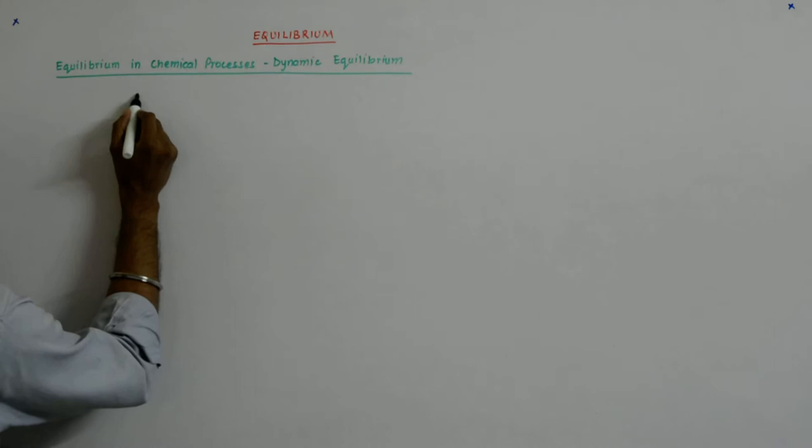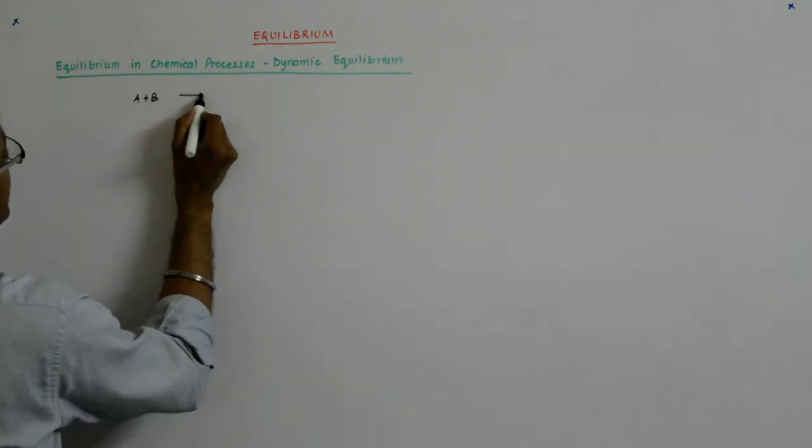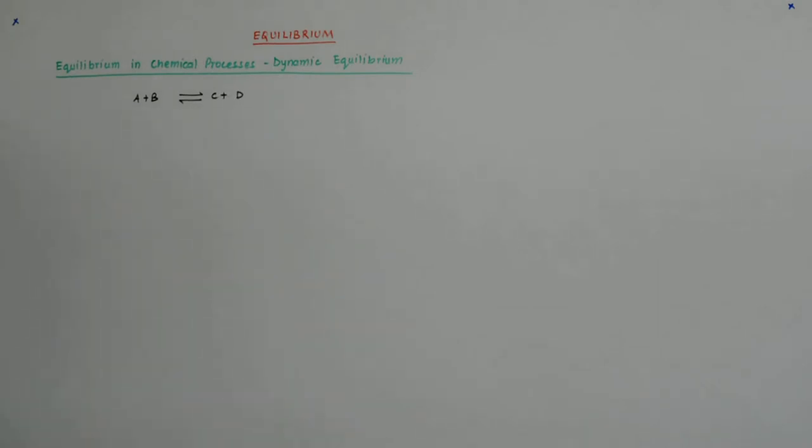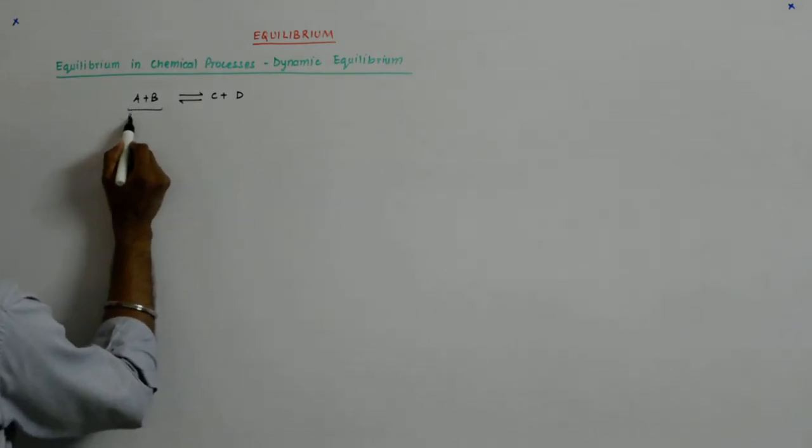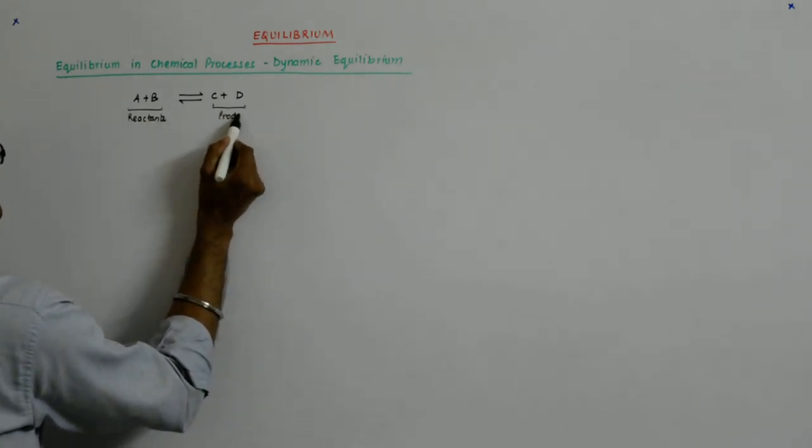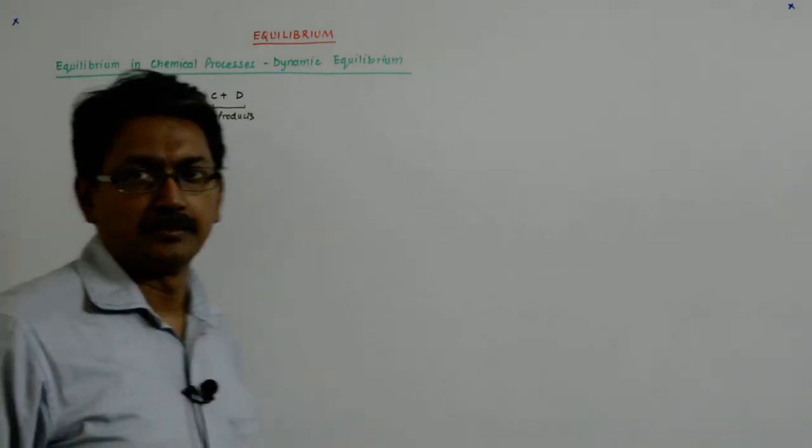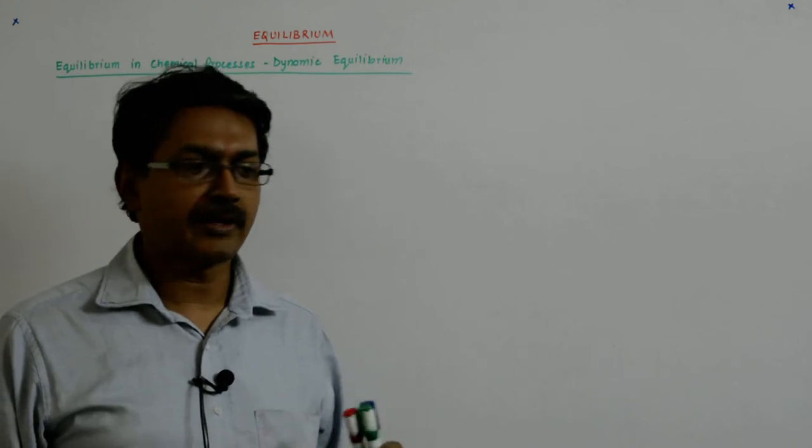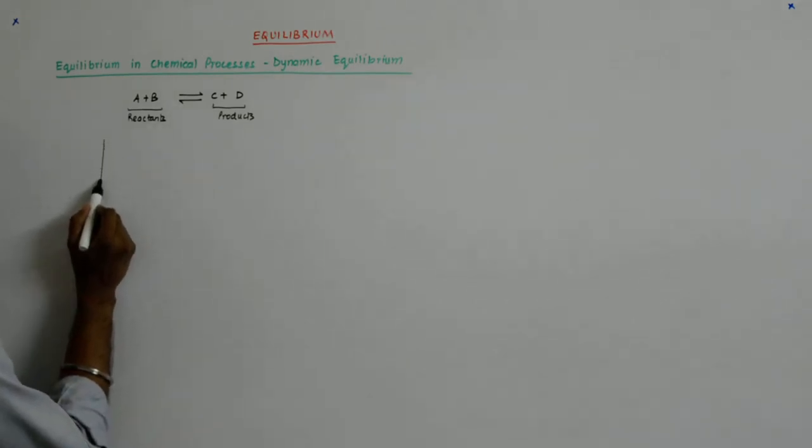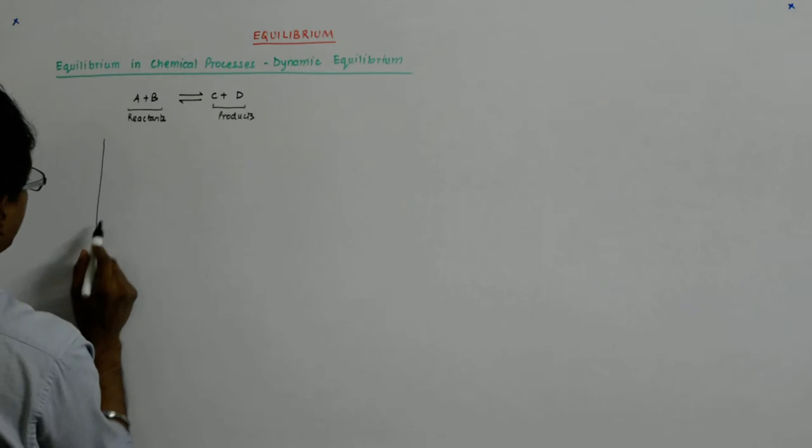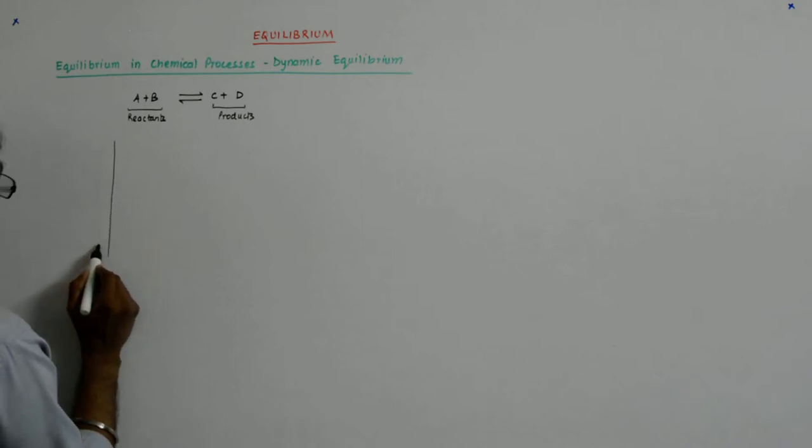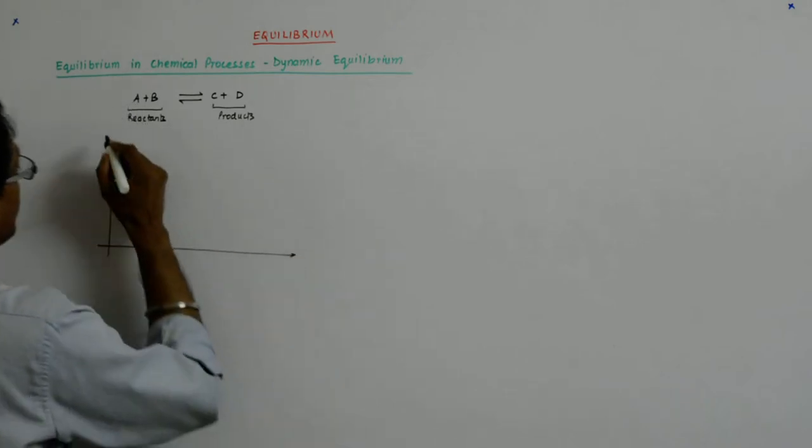So let us say for any general reaction A plus B giving us C plus D. This is the reactants and this is the products. Now what happens if you track any of the reactant or any of the product? You can track the concentration of any one of them, or maybe if they are gaseous, then the pressure. Then you'll find this type of a curve.